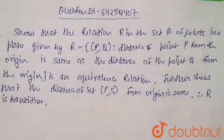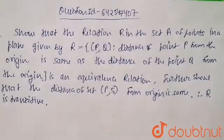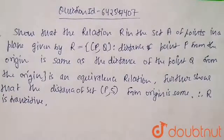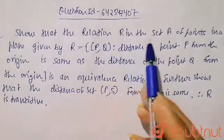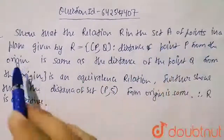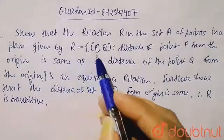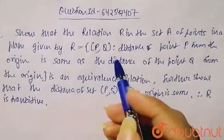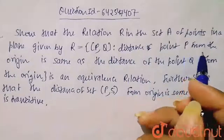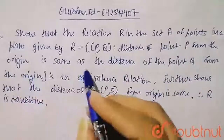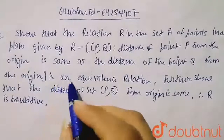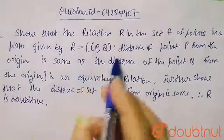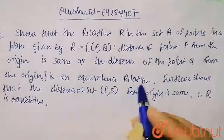Hello guys, so let's first understand this question and then we will solve it. This question says that show that the relation R in the set A of points in a plane, given by R equals to (P, Q) where the distance of point P from the origin is same as the distance of point Q from the origin, and this relation R is an equivalence relation.